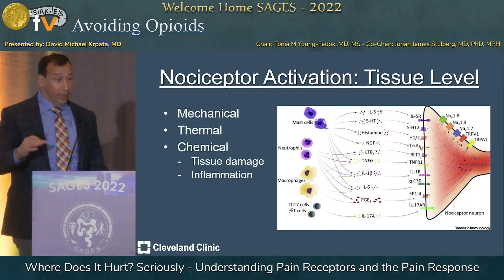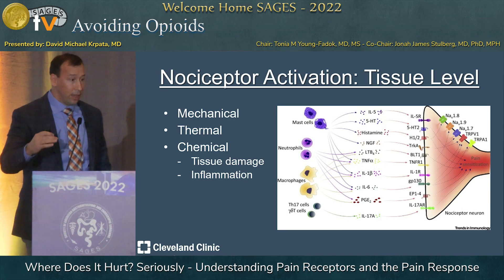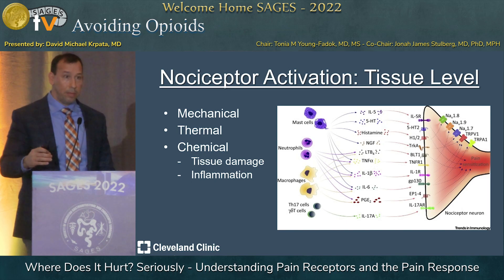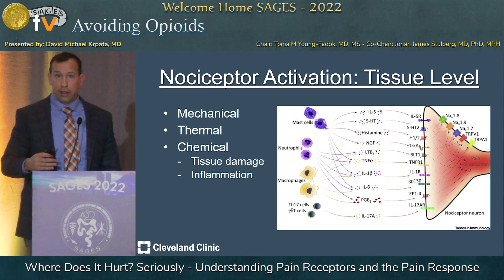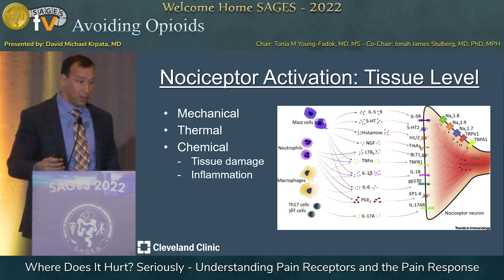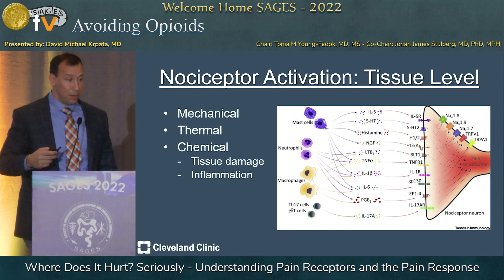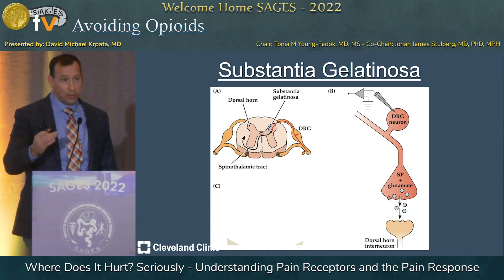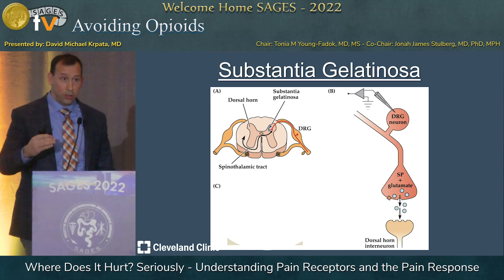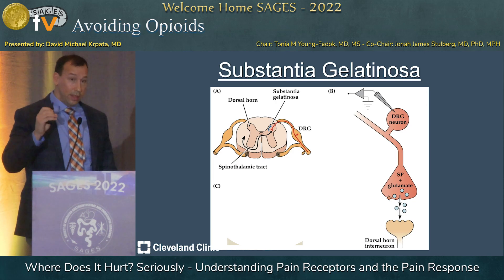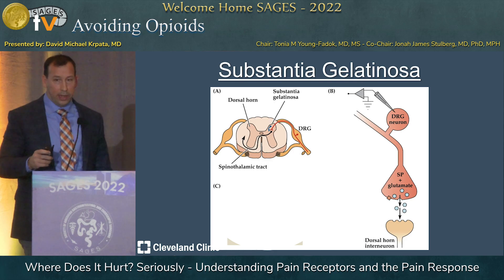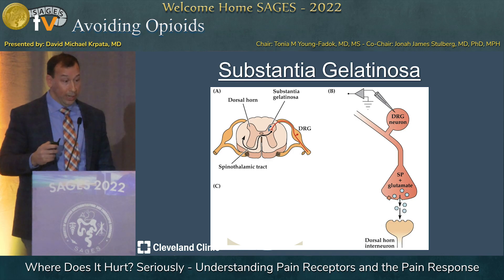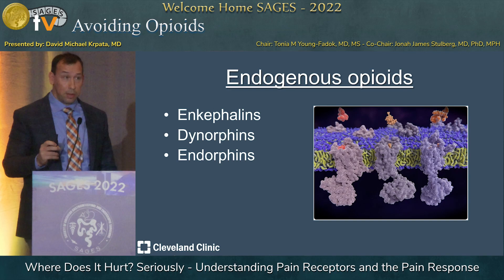So how is the pathway activated? At the receptor level, again it's mechanical or thermal, but for us this is chemical — tissue damage leading to inflammation through mediators that act on the pain receptor to send the signal that starts the pathway. As it reaches the dorsal horn, the area where the real magic happens is the substantia gelatinosa. In the first-order neuron, you get a release of substance P and glutamate, which then activate the secondary neuron that crosses over and goes up to the brain.